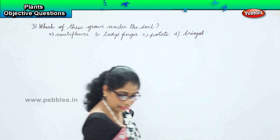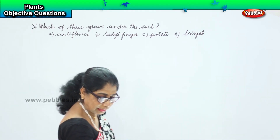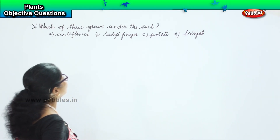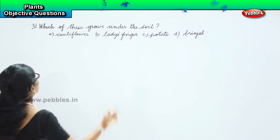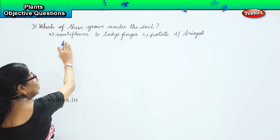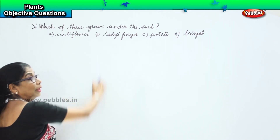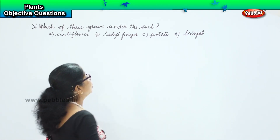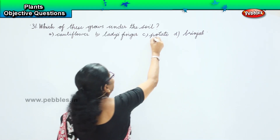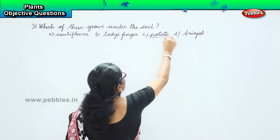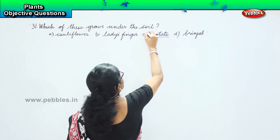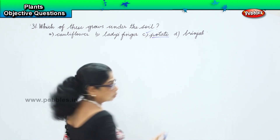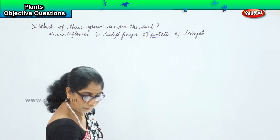Now, which of these grows under the soil? Cauliflower? No. Lady's finger? No. Brinjal? No. It's potato that grows under the soil.